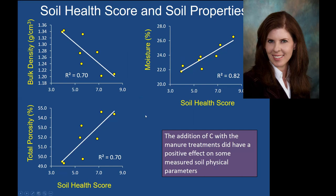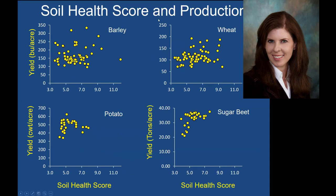But one of the things our producers are going to ask is: what did it do for productivity? Looking at yield versus the soil health score, in most cases, even though our health score was going up, we did not necessarily see any increase in yield. So yield seemed to be independent of soil health score in this case.